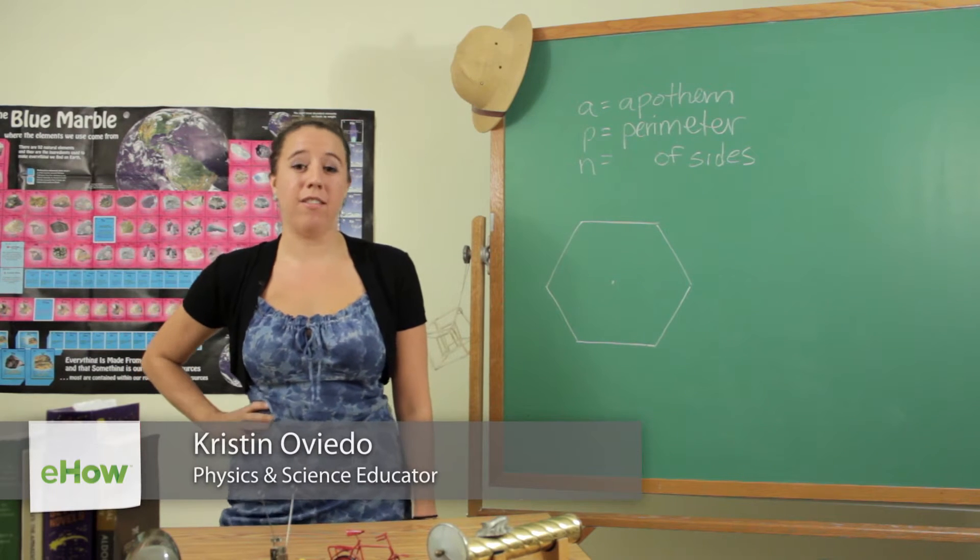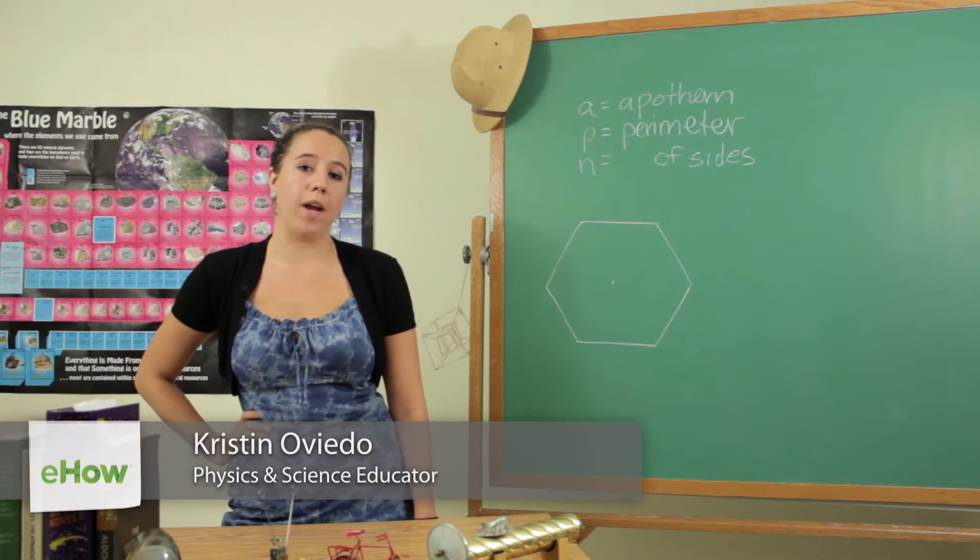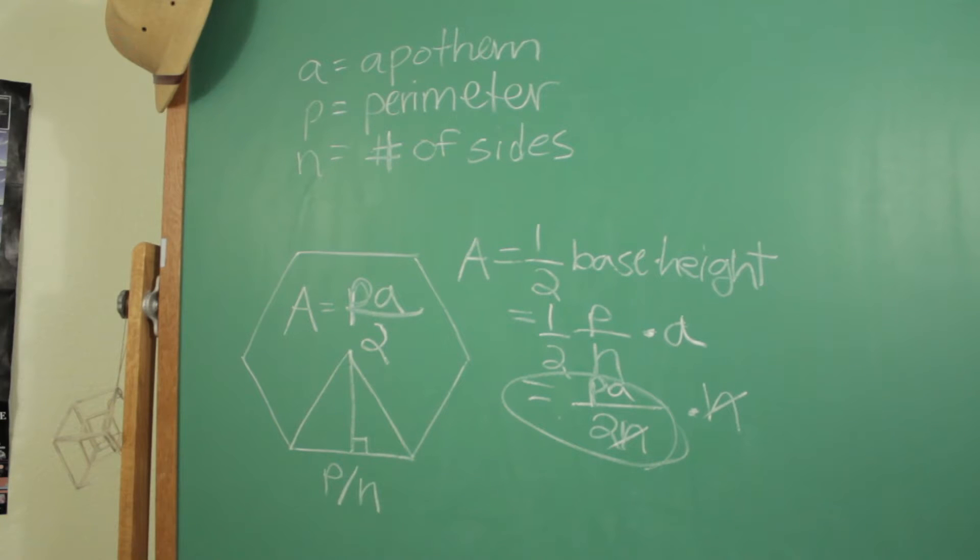Hi, I'm Kristen Oviedo and this is the formula for finding the area of a regular polygon when the perimeter and apothem are given.